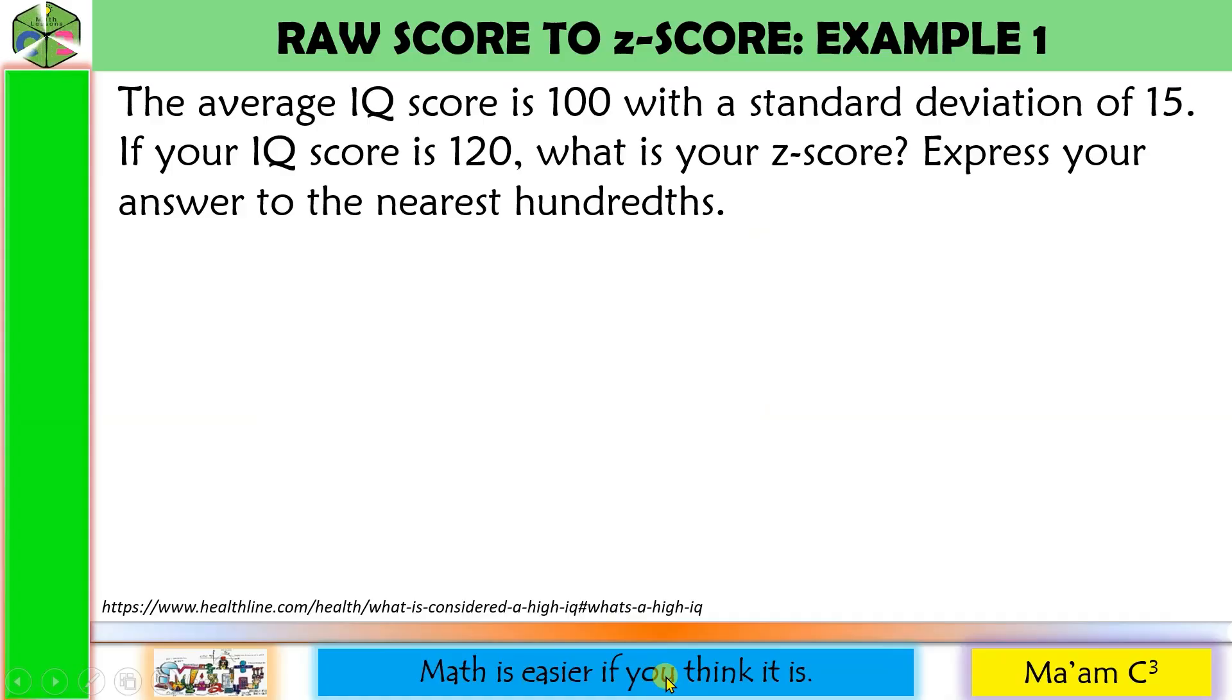Let us have our first example, converting raw score to Z-score. The average IQ score is 100 with a standard deviation of 15. If your IQ score is 120, what is your Z-score? Express your answer to the nearest hundreds. First let us identify what we have here.